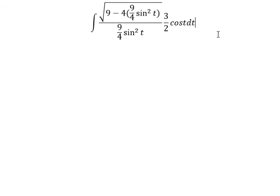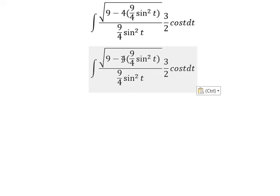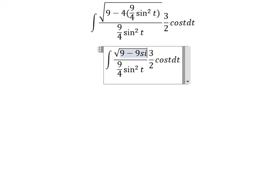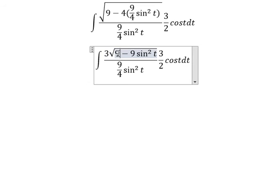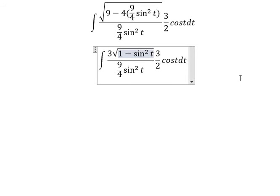Now we need to simplify. 4 multiply with 9 over 4 you will get 9 sine t square. So we put number 9 outside the square root, you got about number 3.